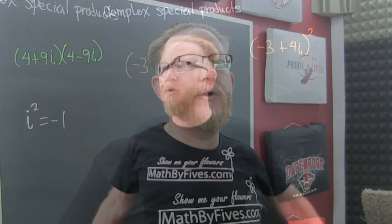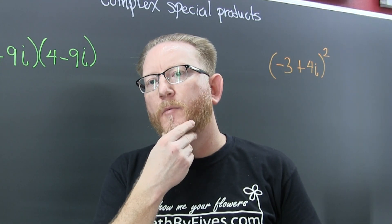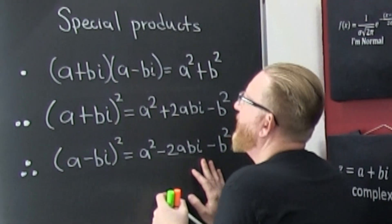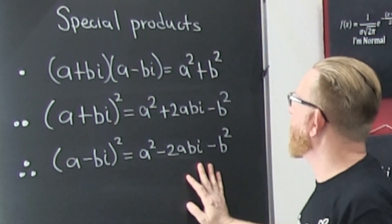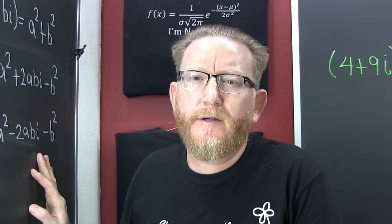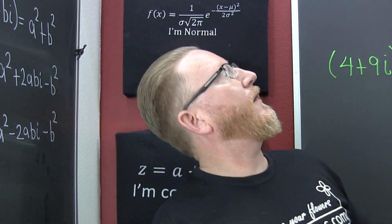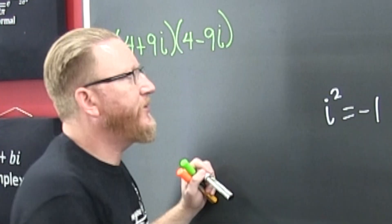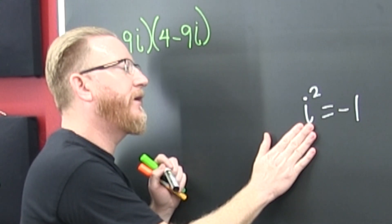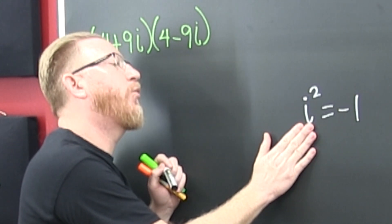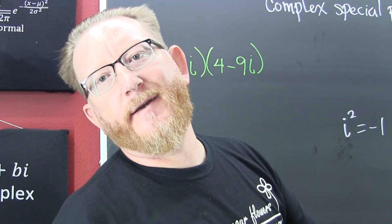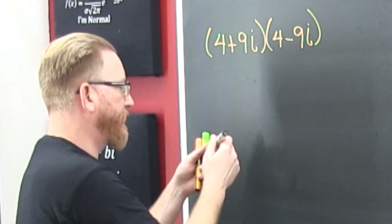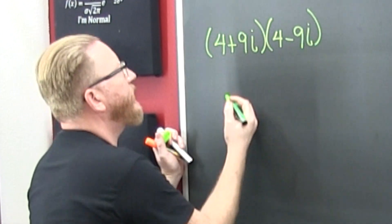Complex special products. What you need to know: i² evaluates to minus one. After that, all you gotta do is FOIL — First, Inner, Outer, Last. Let's get into this example.